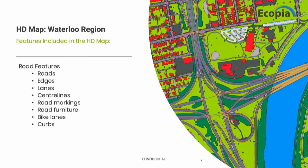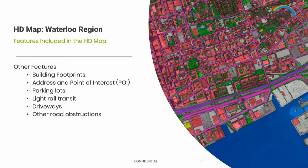What we started creating were maps that have all of these different features so that people can better understand their communities. These maps can be reused for a number of different governmental purposes. One of the most recent projects was working with a few local state governments to help them understand how their pedestrians are moving from one spot to another — having an understanding of bike lanes, sidewalks, and a number of different other features. We've also added building footprints, address points, and parking lots.